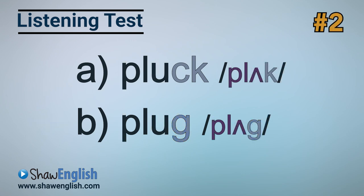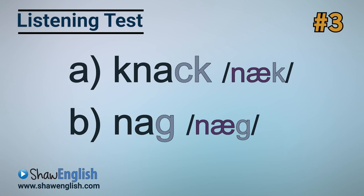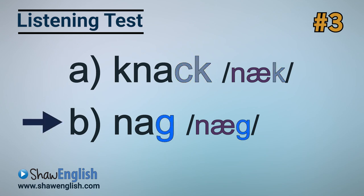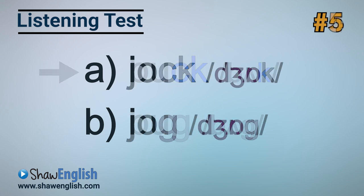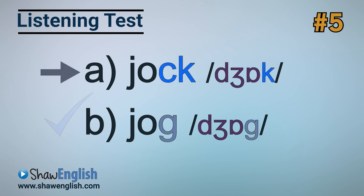Listen: plug. Plug. Word A or word B? It's word B — plug. Word A is pluck. Next: knack. Knack. Answer A is correct — knack. Answer B would be nag. Next: bug. Bug. It's word B — bug. Word A is buck. Next: jog. Jog. B is correct — jog. A is jock.